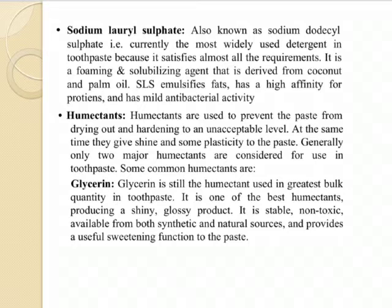Next are humectants. When we hear the word humectants, we should think of moisture. Humectants are used to prevent the paste from drying out — when there is more moisture, the paste will not dry and become unacceptably hard. They also give shine and plasticity to the cream texture of the toothpaste. Generally, only two major humectants are considered for use in toothpaste. The first is glycerin. Glycerin is the humectant used in the greatest bulk quantity in toothpaste. It is very common, easily available, and one of the best humectants, producing a shiny, glossy product.